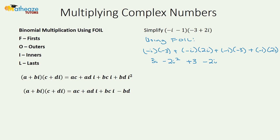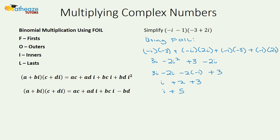Grouping common terms: 3i minus 2i gives i, and minus 2i squared becomes plus 2, plus 3 equals 5. So the result, written in a plus bi form, is 5 plus i.